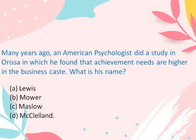Many years ago, an American psychologist did a study in Odisha in which he found that achievement needs are higher in the business caste. What is his name? Levis, Moore, Maslow, or McClelland. The correct answer is D, McClelland.